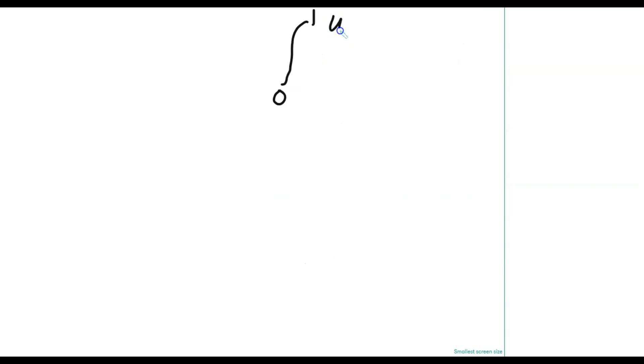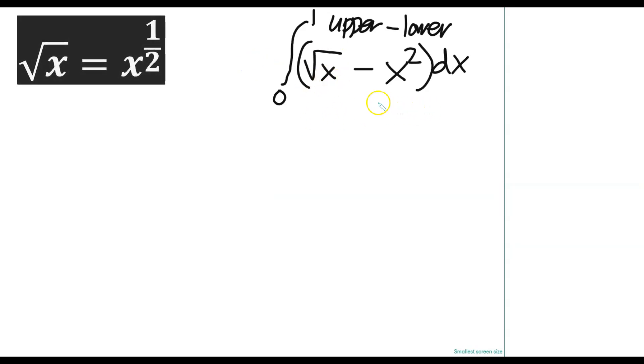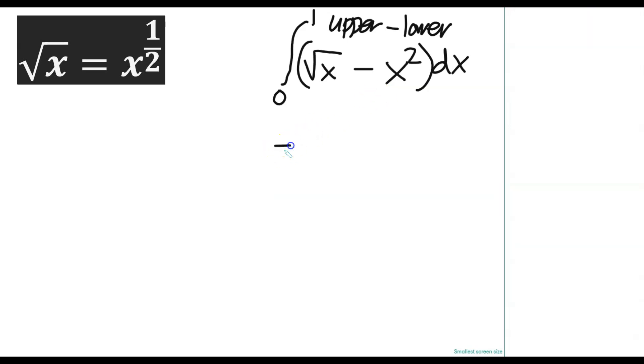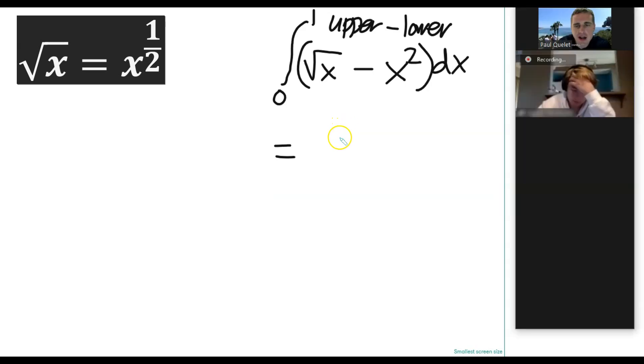Again, upper minus lower is going to be square root of x minus x squared. And then dx, right? Okay. So we can deal with this. Now, by the way, square root of x, we know to be what? Fractional exponent? One half. Okay. So I'm not going to write that on here, but let's just treat it like that as we move forward.